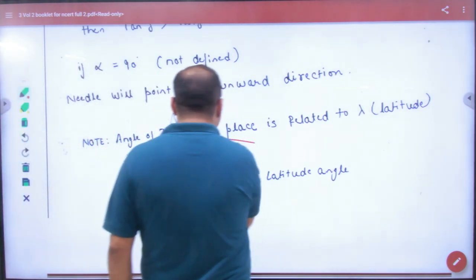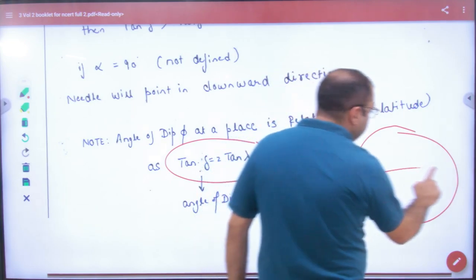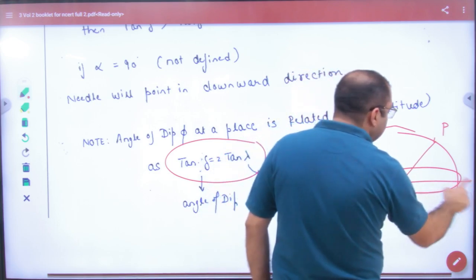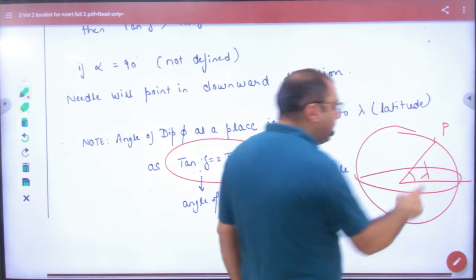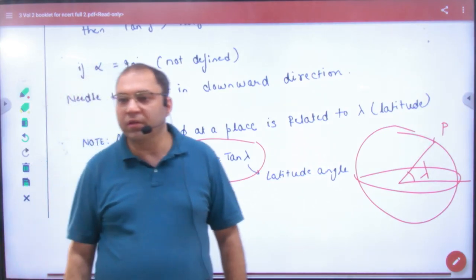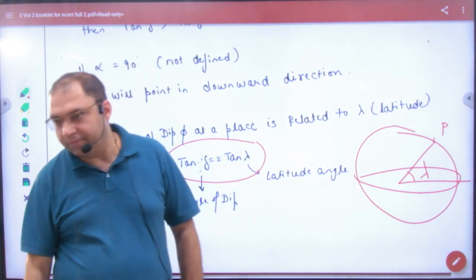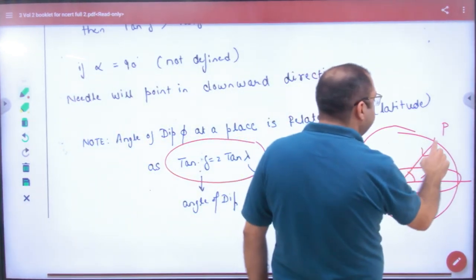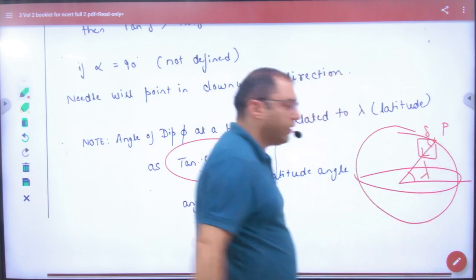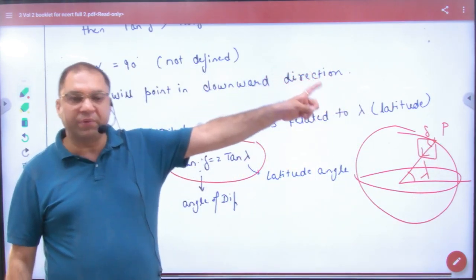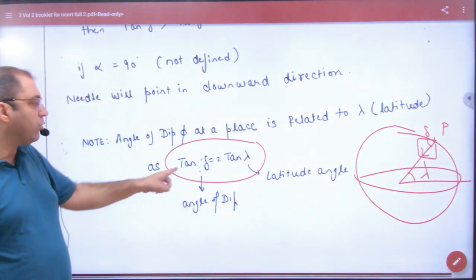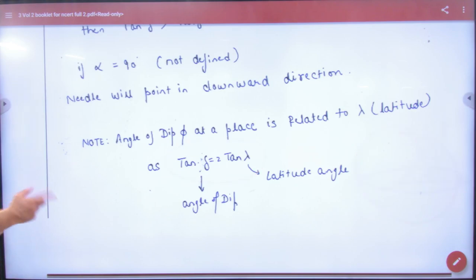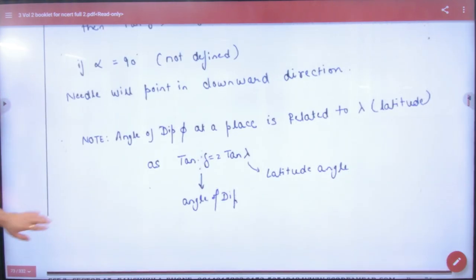Now we can write this result. This result is, that if you have earth and earth's equator, and you are standing on this location, and on this equator, it has made lambda. This lambda, what do we call? Latitude angle. And here, if you have magnetic field and meridians draw, then this angle of dip will also be made here. So angle of dip on this point and latitude on this point, as related, tan of delta is 2 times tan of lambda. Note this, it will be possible to mark it.